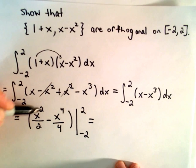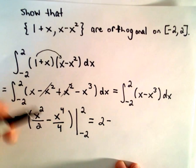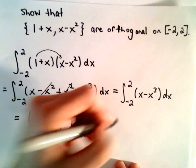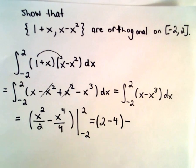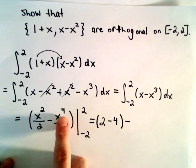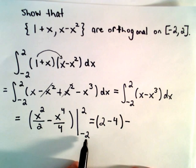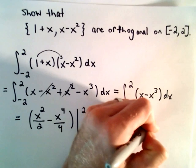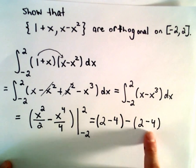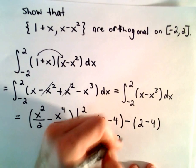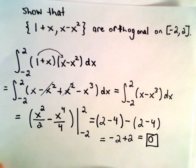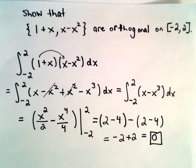Both of these are even functions, so we're clearly going to get the same value from negative two to two — so maybe it's obvious that we get zero. But let's go ahead and evaluate: two squared is four, four divided by two is two; two to the fourth is 16, 16 divided by four is four. Since we're squaring and raising to the fourth power, substituting negative two gives the exact same result, so we have negative two minus negative two, or negative two plus two, which equals zero. So yes, those two functions are orthogonal.